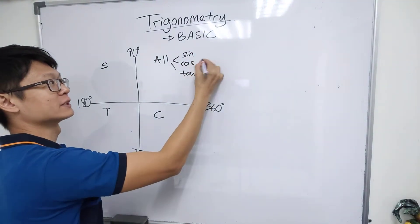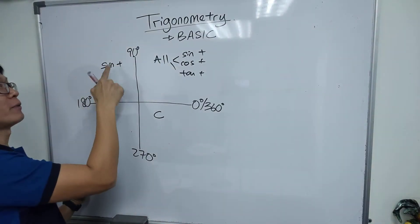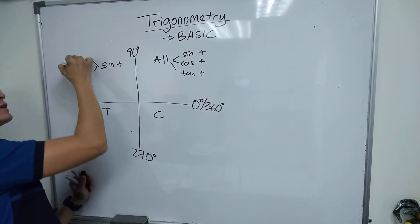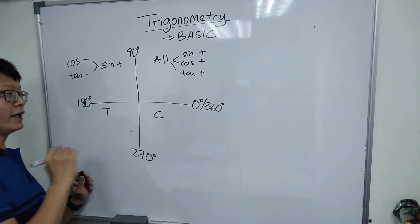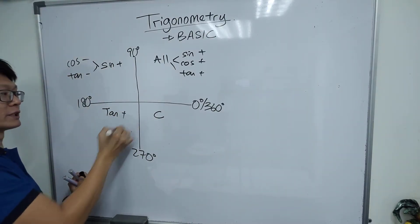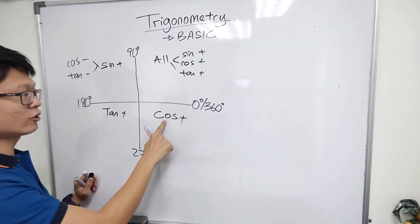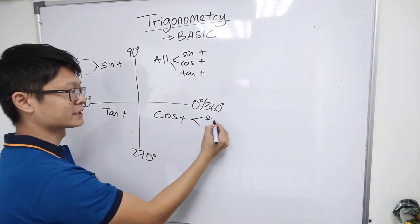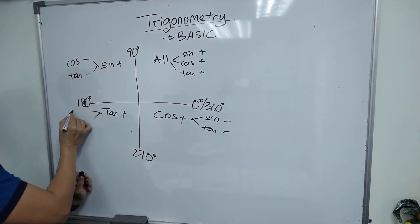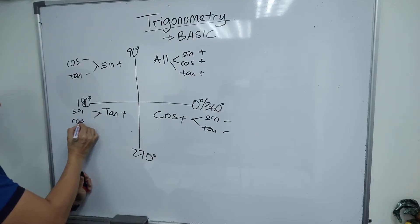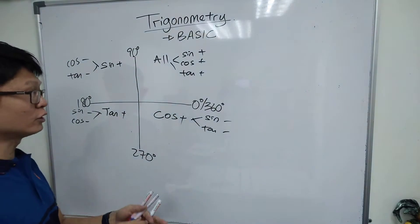When I say 'Sine' — sine is positive, which means cosine and tangent will be negative. 'Tangent' positive only here, 'Cosine' positive only here. If cosine is positive, then sine and tangent will be negative. If tangent is positive, then sine and cosine will be negative. That's the basic.